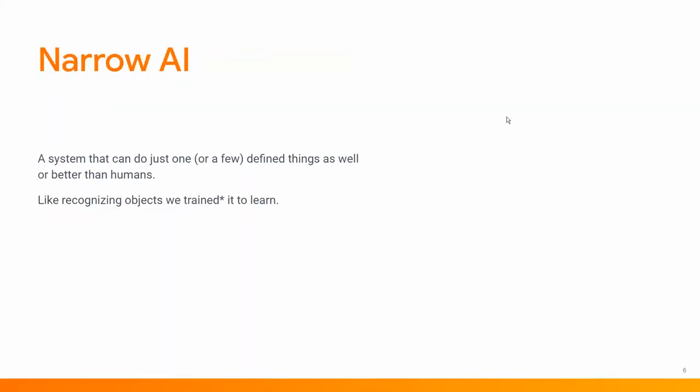AI is a very broad term, and right now we're actually in a place of narrow AI. This basically means that the system can do one or a few things just as well as a human counterpart in that niche area, such as recognizing objects. A great example is in the medical industry, where experts use machine learning to work alongside them to help point out what parts of an image may contain a brain tumor — leading to better results because ML can pick up on fine differences the human eye might miss.